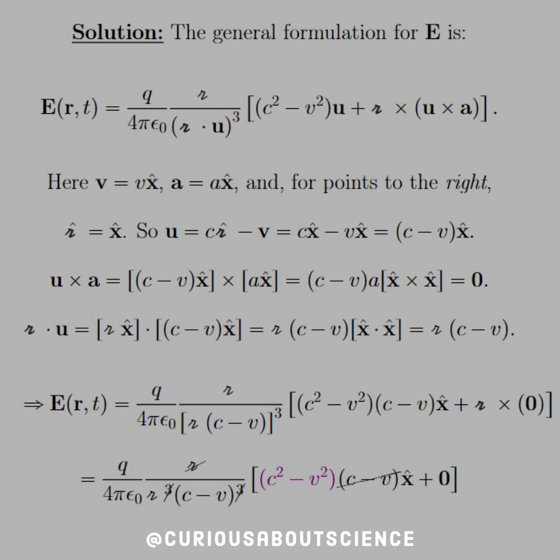So u is equal to C R-hat minus V. Again, if that's the case, then we have C x-hat minus V x-hat, so that's where we get our C minus V.